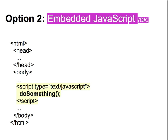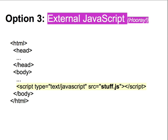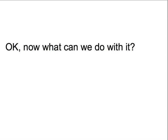Finally, there's external JavaScript. We like this method of including JavaScript the best. You can create a separate JavaScript file containing all your code and then add a script element to your HTML in either the head or the body with a source attribute that points to the URL of that JavaScript file. As with embedded JavaScript, the browser will load and execute the JavaScript in your external file when it reaches the script tag during parsing. So now we've seen how to get JavaScript into our web page. Now, what can we do with it?